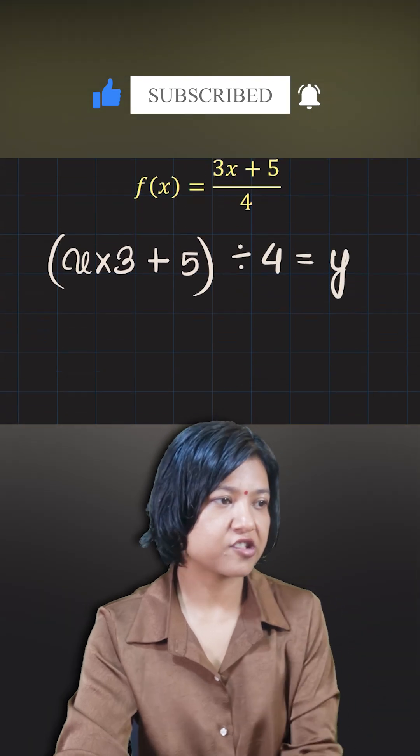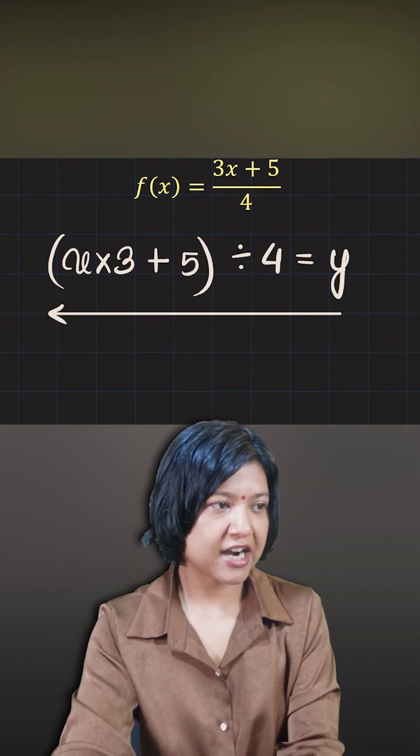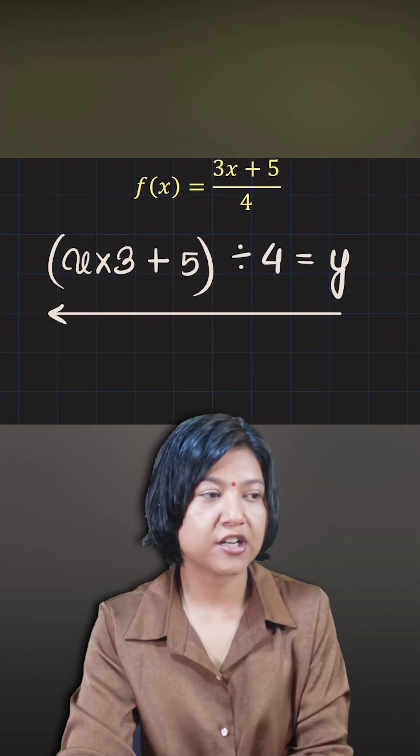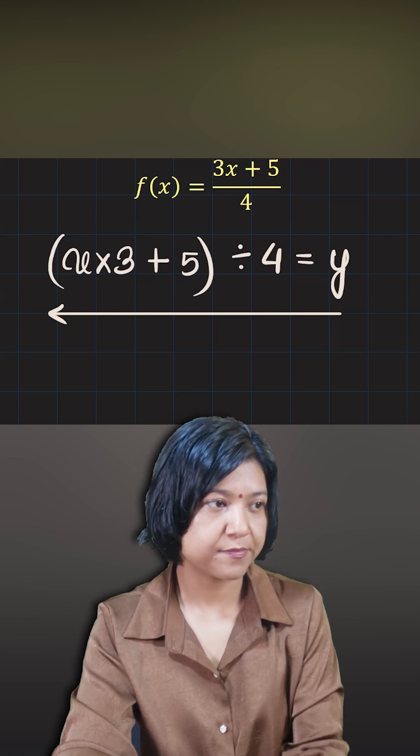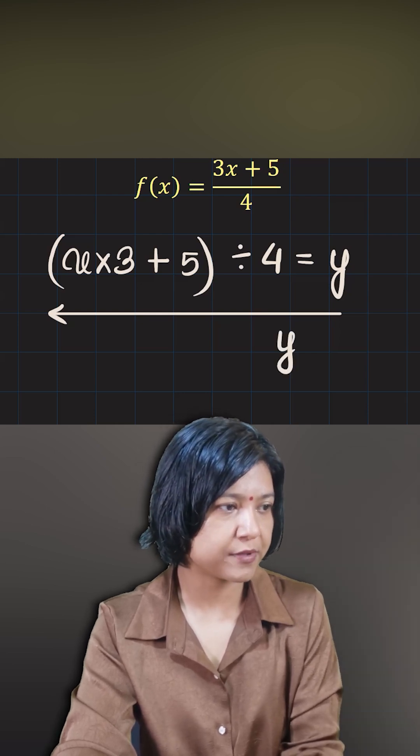Now for the opposite function or for the inverse function, what you do is just go opposite. You start with the output because for the inverse function, the output of the first becomes the input. So we are saying if y is the input now, going backward just oppose the operation.